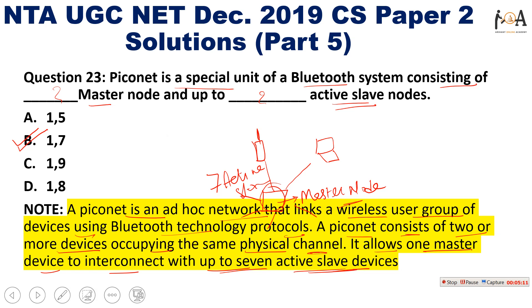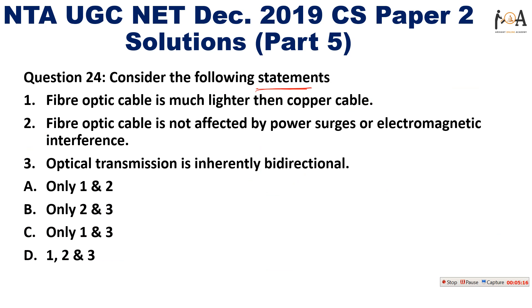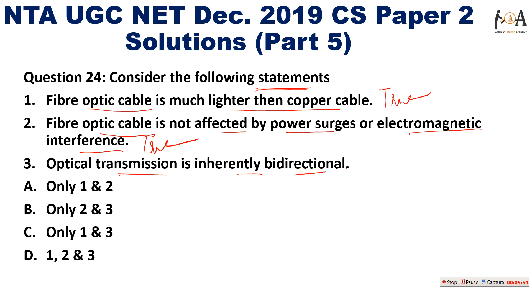The next question: consider the following statements. Statement 1 — fiber optic cable is much lighter than copper cable: true. Statement 2 — fiber optic cable is not affected by power surges or electromagnetic interference: true. Statement 3 — optical transmission is inherently bi-directional: false, it is not inherently bi-directional. So only statements 1 and 2 are true, making option A the correct answer.